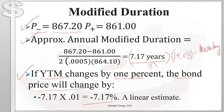This is a linear estimate — it tells us that regardless of the direction of the interest rate change, the bond's price will change by the same amount: 7.17%.